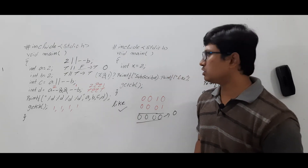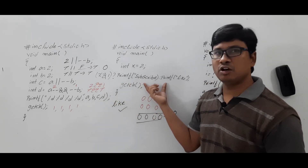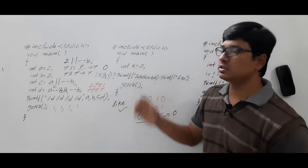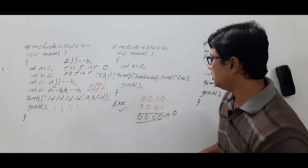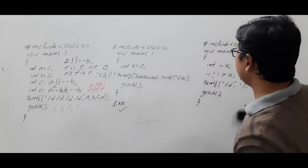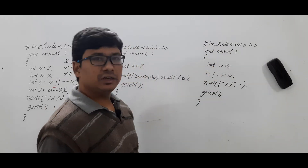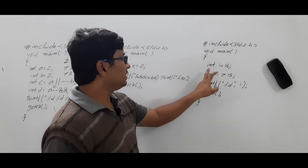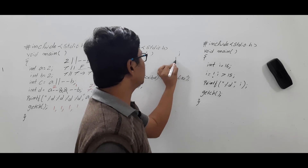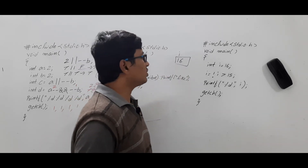I hope you have understood how bitwise AND and the conditional operator work. If you have any doubts, feel free to ask in the comment section. Now we will discuss another interesting question. #include <stdio.h>, void main, int i = 16 — so i is initialized with the integer constant 16.